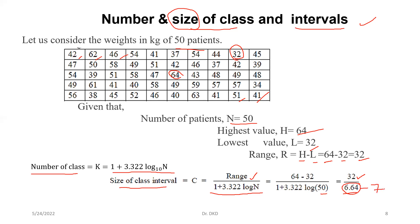So number of class would be 7 and here 32 is the range, so it would equal 32 divided by 7. So we'll get a value around 4 point something, around 5. 5 would be the size of the class interval. So here we'll create with help of this data, our number of class intervals would be 7 and size of the class interval would be 5.